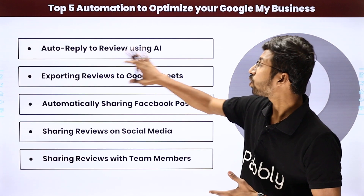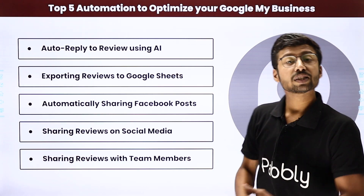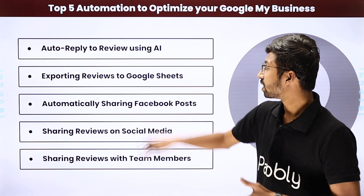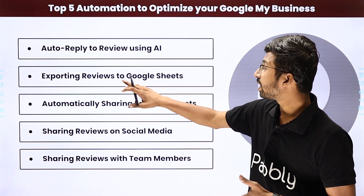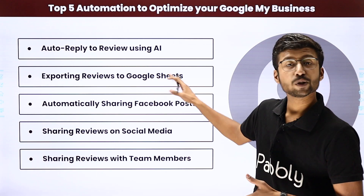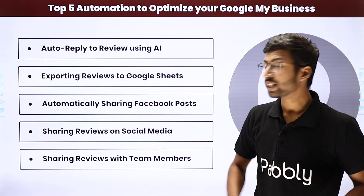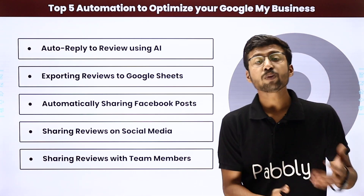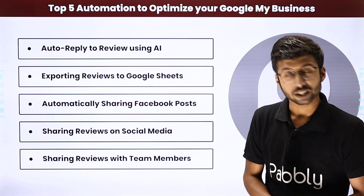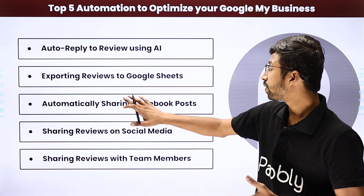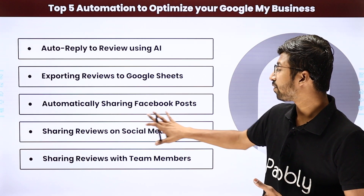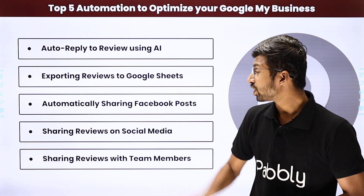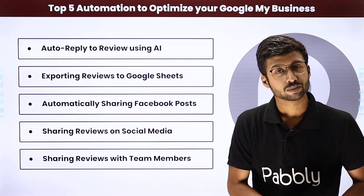The first idea is auto-replying to reviews on Google Map Business using artificial intelligence. The second idea is exporting reviews to a Google Sheet. The third is automatically sharing our Facebook posts on Google Map Business. The fourth is sharing reviews on social media, and the fifth and last one is sharing reviews with our team members.